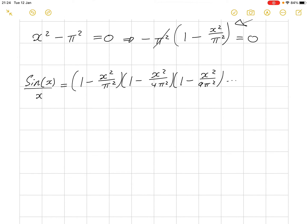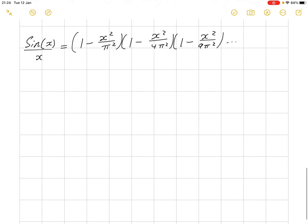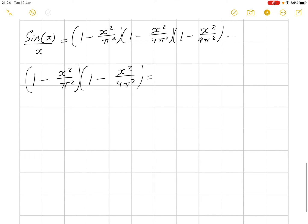Now, I'm going to multiply this and this and see what we get. So, 1 minus x squared over pi squared times 1 minus x squared over 4 pi squared. And, this is 1 into 1 minus x squared over 4 pi squared plus minus x squared over pi squared into 1 minus x squared over 4 pi squared. And, this is, of course, 1 minus x squared over 4 pi squared minus x squared over pi squared plus x to the power of 4 divided by 4 pi to the 4.